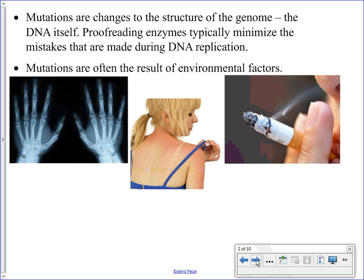Most cancers are not inherited but are the result of exposure to various carcinogens or mutagens. Exposure to X-rays, ultraviolet radiation from the sun, and chemicals in cigarette smoke are all environmental factors — they are not things an individual is born with or passed on from parents to offspring. It is exposure to things in the environment that can lead to mutations and changes to the DNA.